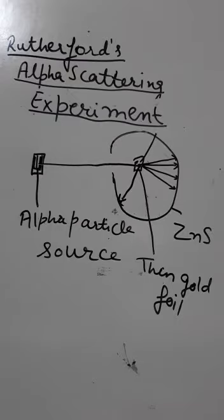In 1911, Rutherford the British scientist performed some experiments for studying the scattering of alpha particles by thin metal foil.